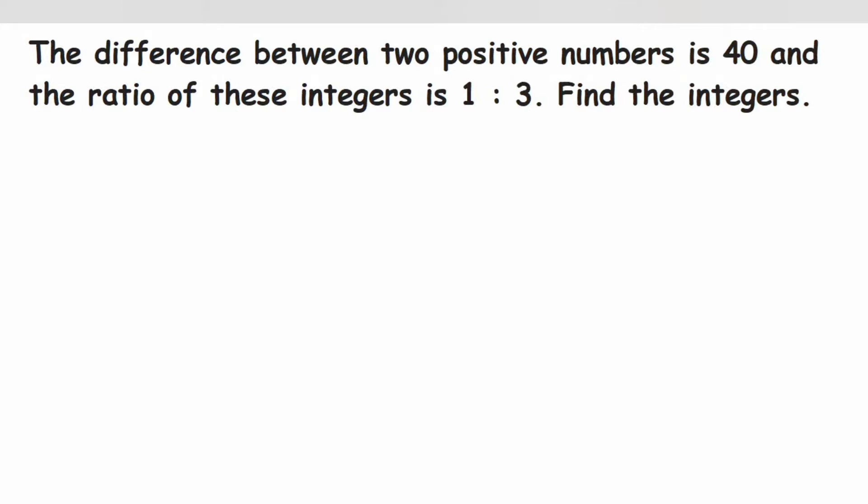Hey everyone, I'm doing here a question from linear equation in one variable of class 8. The question is: the difference between two positive numbers is 40 and the ratio of these integers is 1 is to 3. Find the integers.